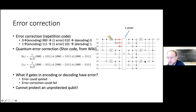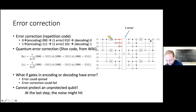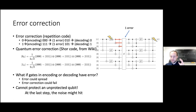There is one more observation, maybe trivial but important: regardless of how you encode your qubit, you can never protect an unprotected qubit from an error happening at the very last step right before you output it. If an error occurs just as you decode to the unprotected qubit, there is no protection. This is a fundamental limitation.